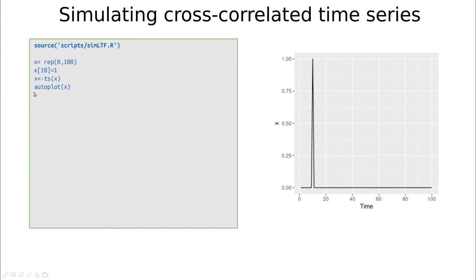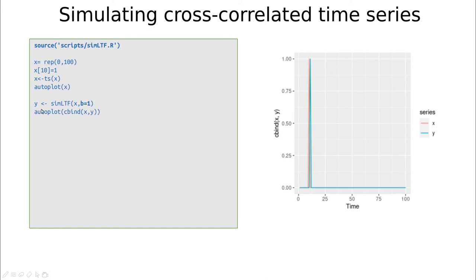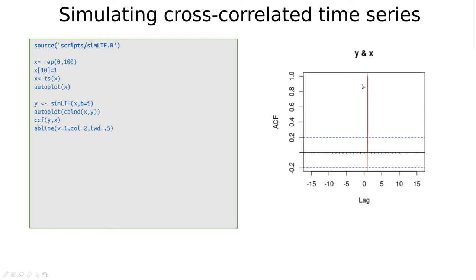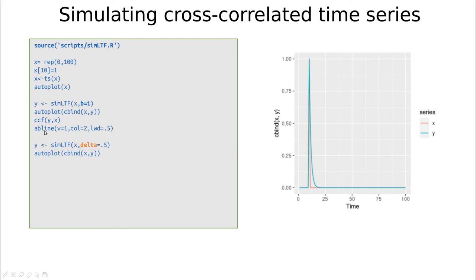Let's create a very simple predictor x that is zero everywhere except at time t=10 — an impulse function. This is useful for applications like modeling the effect of a state-of-alarm declaration in different countries. If we simulate y with b=1 and all omega and delta equal to their basic values, y is simply x shifted by one position. If b=2, the impulse shifts to t=12, and so on. Looking at the CCF, we see only a spike indicating that x and y are essentially the same signal, but the red line plotted at lag=1 tells us x leads y by one time step.